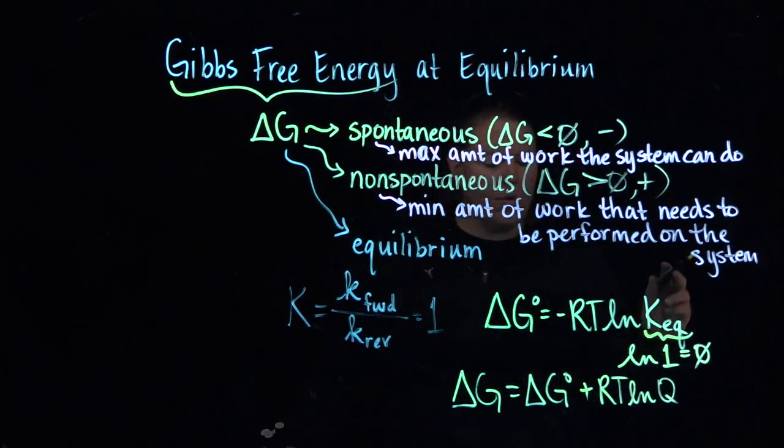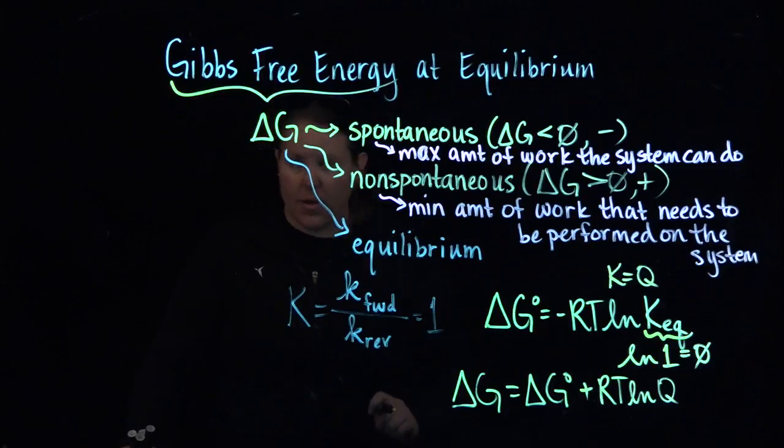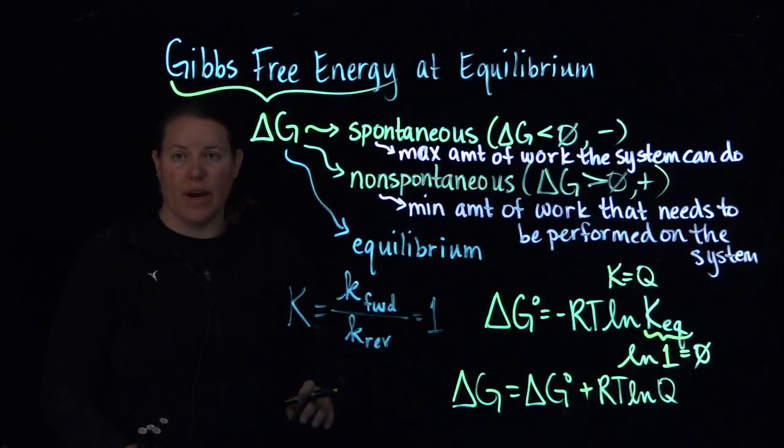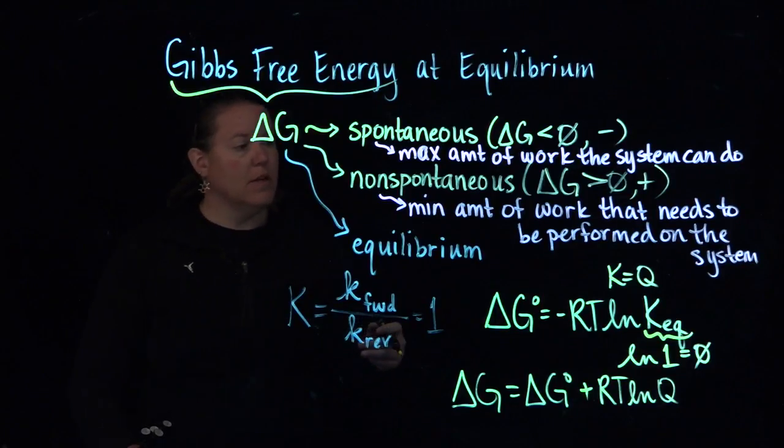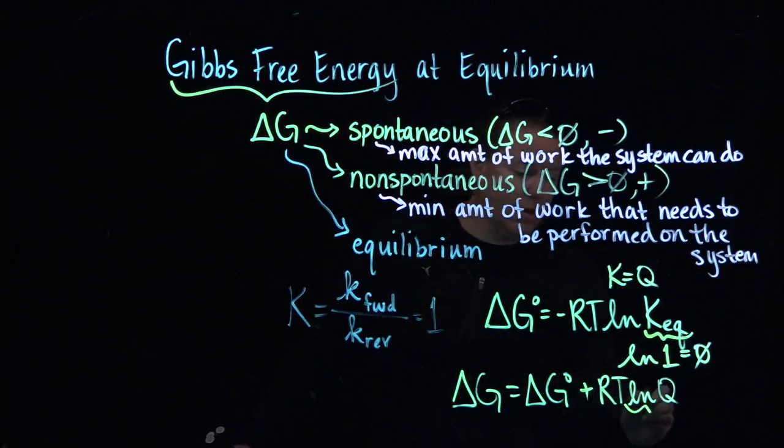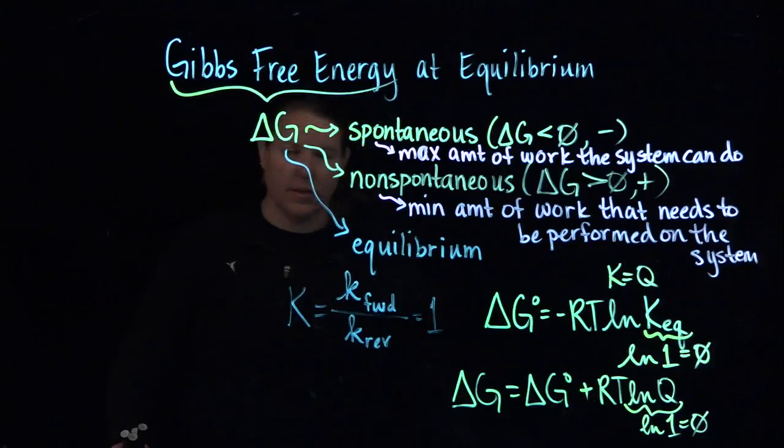But we know at equilibrium, K is equal to the reaction quotient. That's actually another way to think about equilibrium, the reaction quotient, which is the measure that's just like K at any time during the reaction. Often we deal with it in the initial pieces. At equilibrium, K is equal to Q. So this would also be the natural log of one, which is zero. So we have zero plus zero, which is still zero.